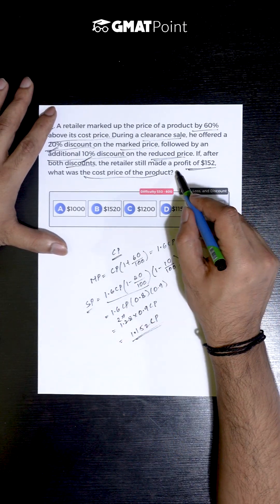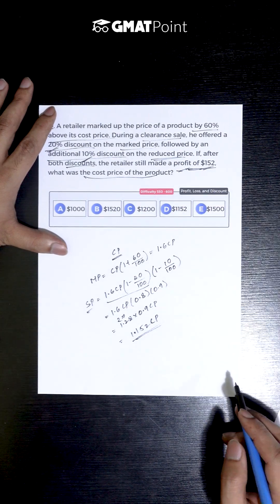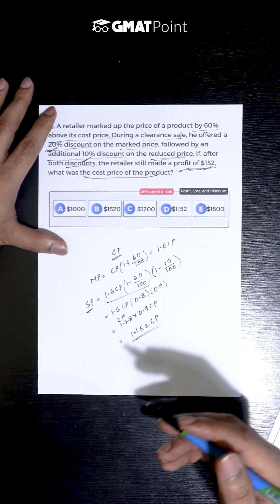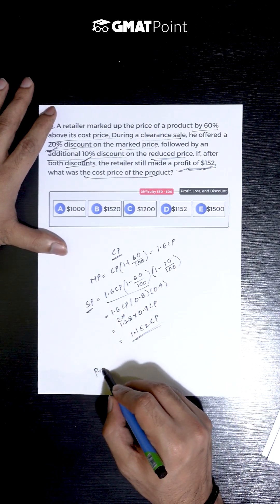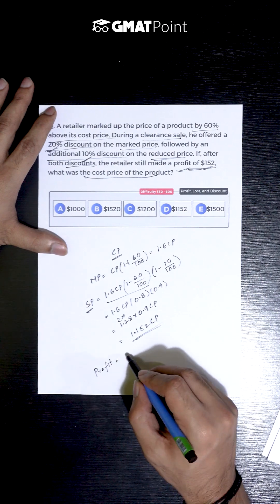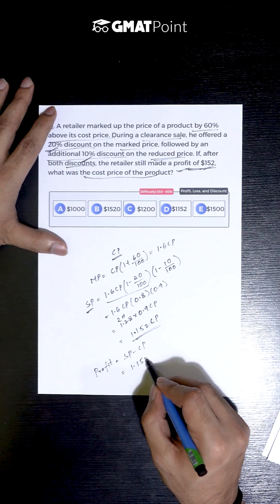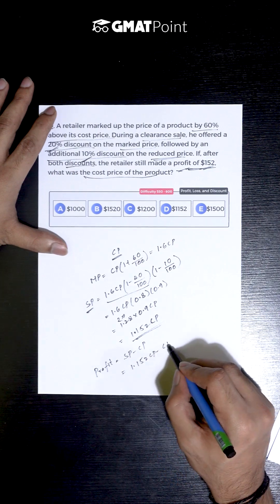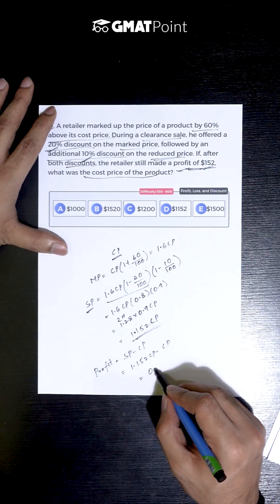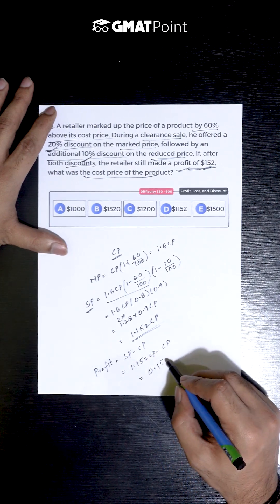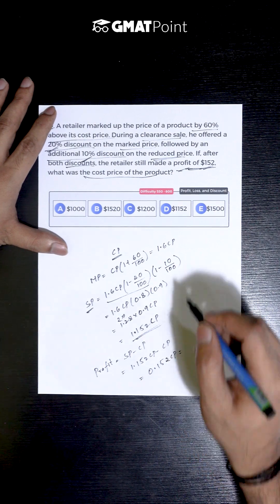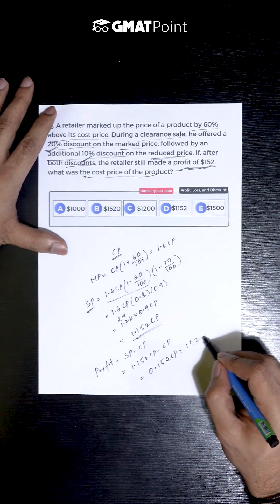We are told that he made a profit of $152. So clearly the selling price is greater than cost price, and the profit made can be calculated as SP minus CP, which is nothing but 1.152 CP minus CP. That is nothing but 0.152 CP, and we are given this value to be $152.